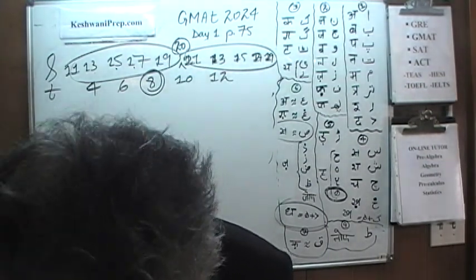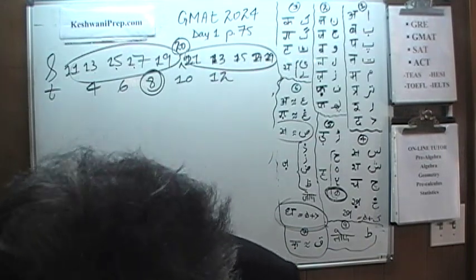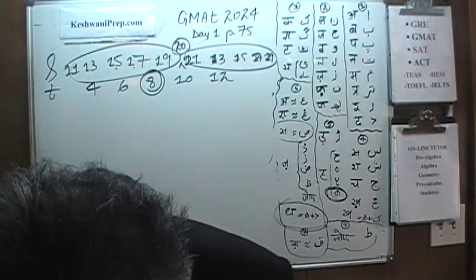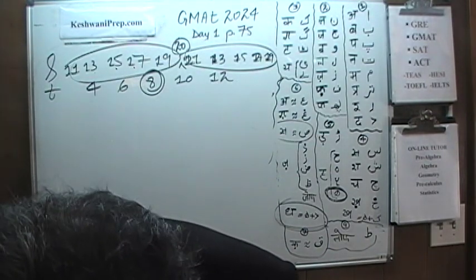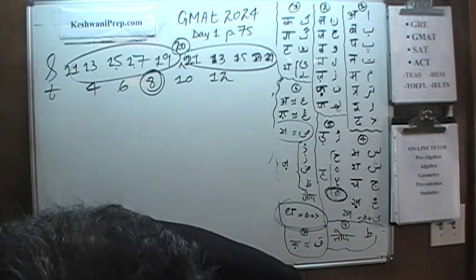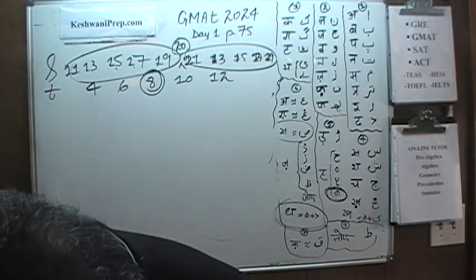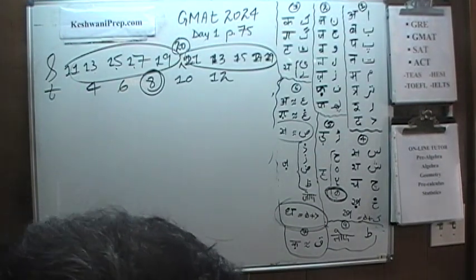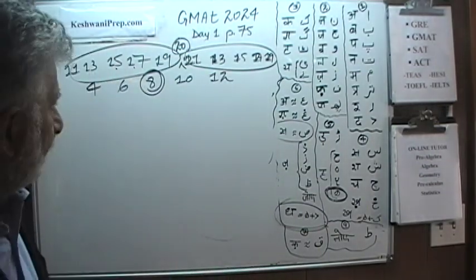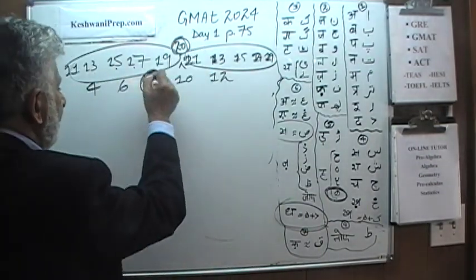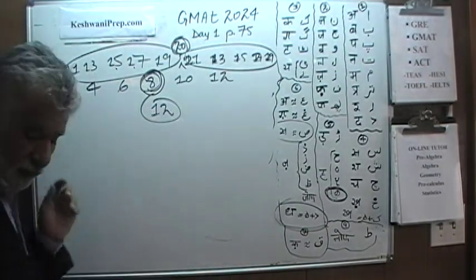Let me check in the back — number 6. The answer is D. So the answer is 20 minus 8 equals 12. The answer is D. That was number 6 — I'm not sure how I missed it.